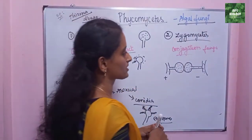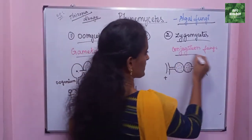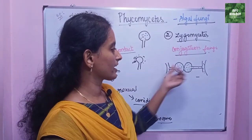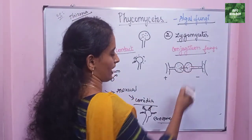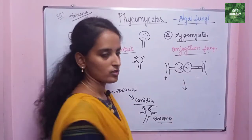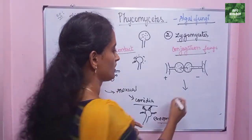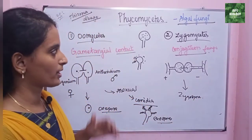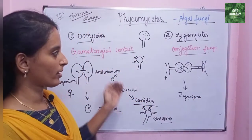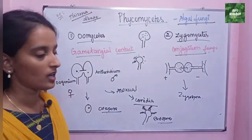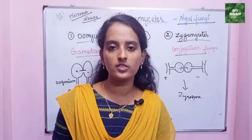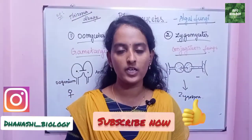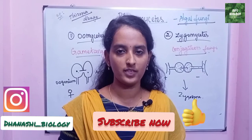Zygomycetes is conjugation fungi. These two strains are contacted and form zygospores — this is the spore called zygospore. So asexual reproduction in Zygomycetes and the two types of Phycomycetes — Oomycetes and Zygomycetes — have been covered. Like, share, and subscribe. Thank you.